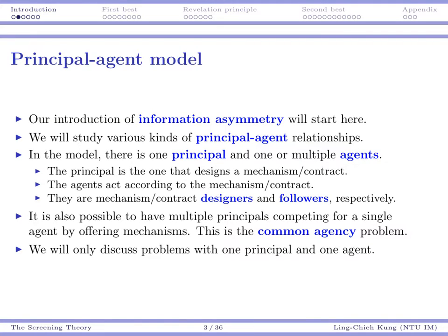In our model, there will be one principal — one player called the principal — and one or multiple agents. Agents are also players. The difference is that the principal is the one that designs a mechanism or contract. The principal offers a mechanism or contract to the agent, and then the agent will choose their actions according to that mechanism or contract.